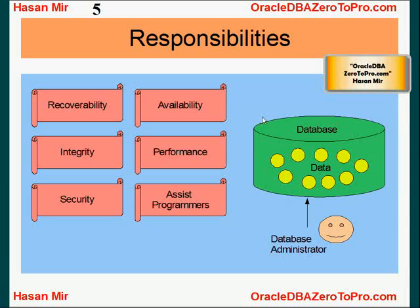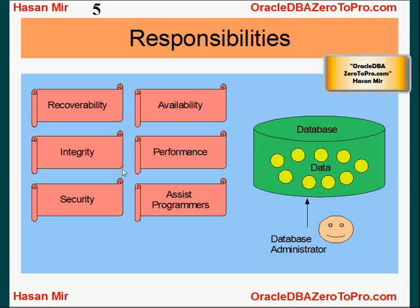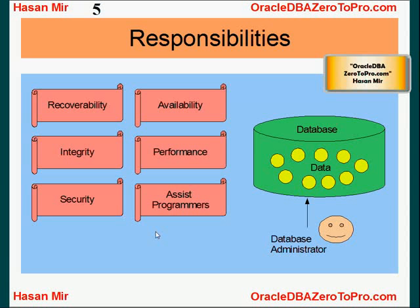Data integrity is also the responsibility of a DBA — whatever data is in the database must be true and make sense in comparison to other data in the database. It has to be point-in-time data; it has to be true data. This also involves making sure that data files are not corrupted, because corruption could cause data integrity issues. Security is also a DBA responsibility — only those people and applications that have privileges should be accessing the database, and only the parts that have been allowed by the administrator. Security is very important.